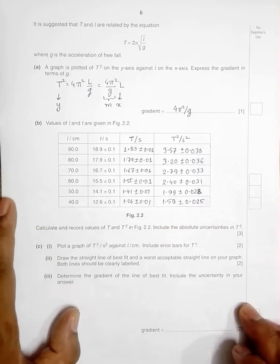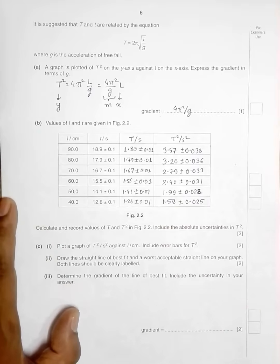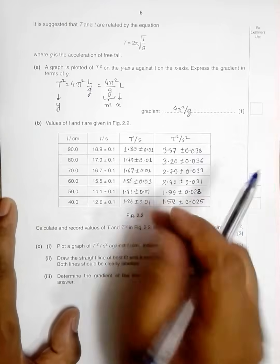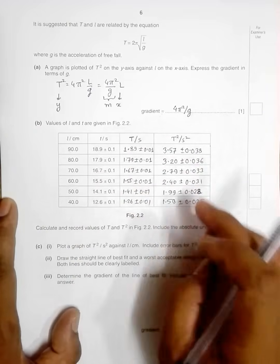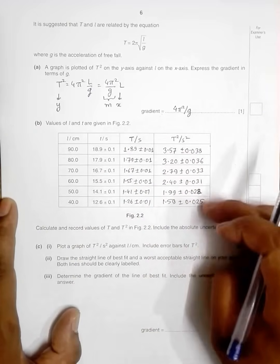So this is the complete table. Now the scoring is somewhat like this: this scores one mark, this whole thing scores one mark, this scores one mark, and this scores one mark.